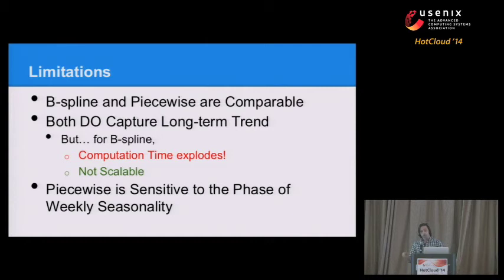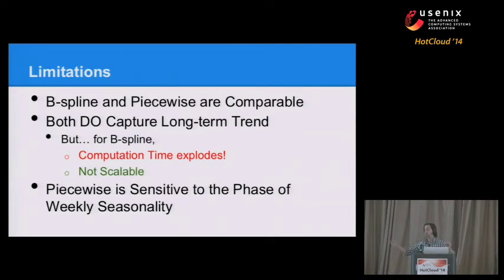B-spline and piecewise are comparable in performance, except for the speed runtime difference. They find similar anomalies in the controlled situation, but in actual production data the piecewise picks up some interesting things that B-spline might miss. Also, how smooth the B-spline trend fits is a function of the data length — it fits slightly differently for a month versus two years. Whereas piecewise has a consistent fit for the trend regardless of how long a period you're looking at.